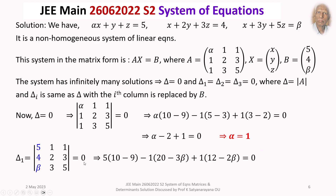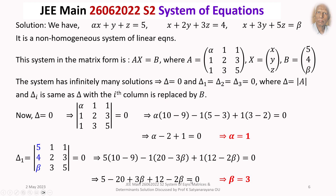Next, delta₁ equals 0. Delta₁ is the same as delta with the first column replaced by the column vector B, which is (5, 4, beta), shown in blue. Expanding by the first row and simplifying, this gives beta equals 3. So delta₁ equals 0 implies beta equals 3.